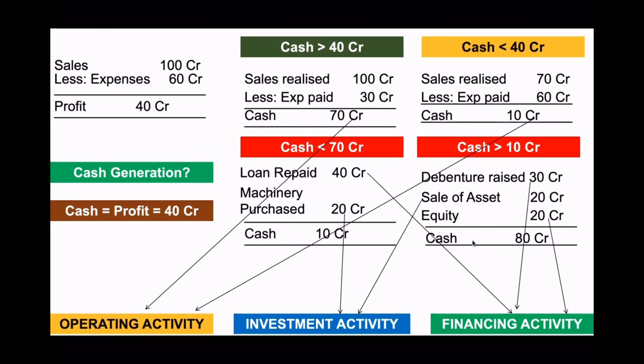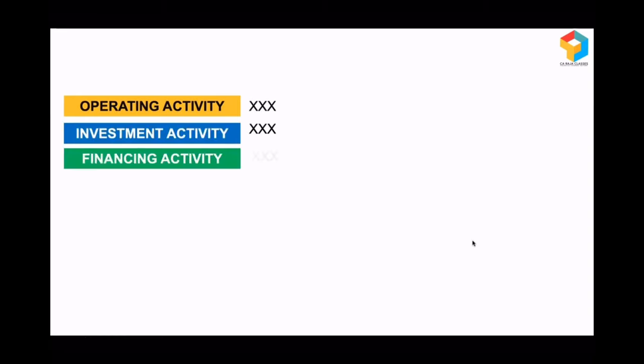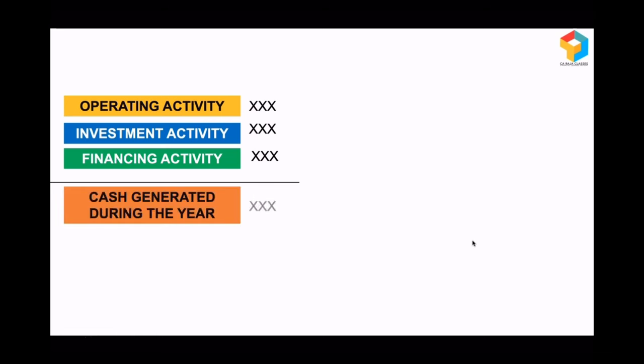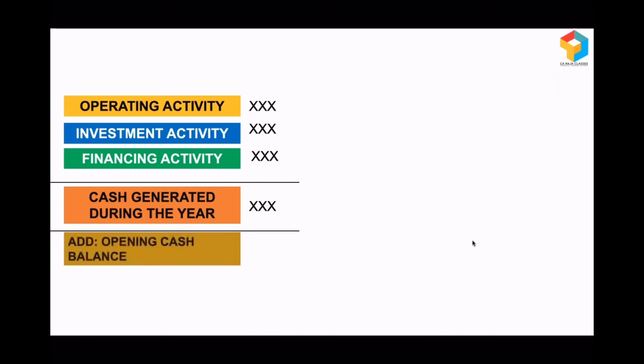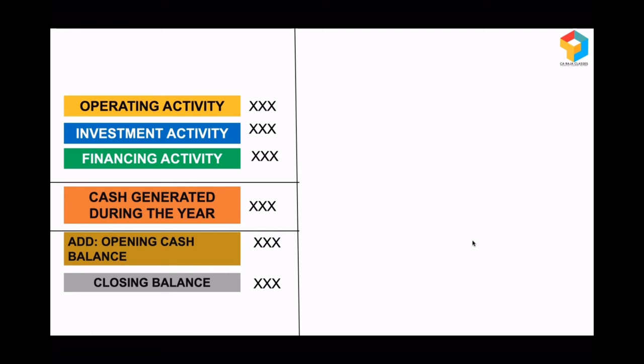The equity of 20 crore coming in is financing activity, and the 10 crore cash is from operating activity. So in business, cash can come in and go out under three activities: operating activity, investment activity, and financing activity. In a year, if you capture all cash flows from these three activities and total them, you get to know what cash was generated during the year. Adding the opening cash and equivalents gives you the closing cash and cash equivalents position — this is the abridged cash flow statement.